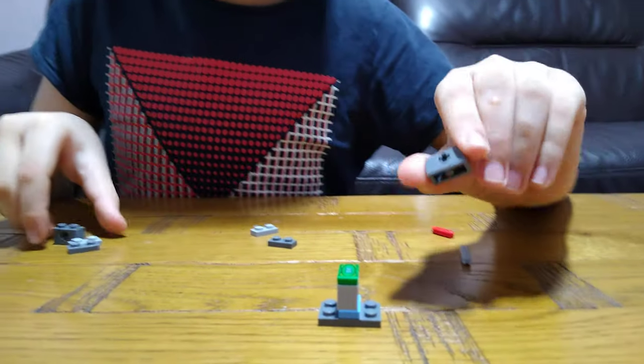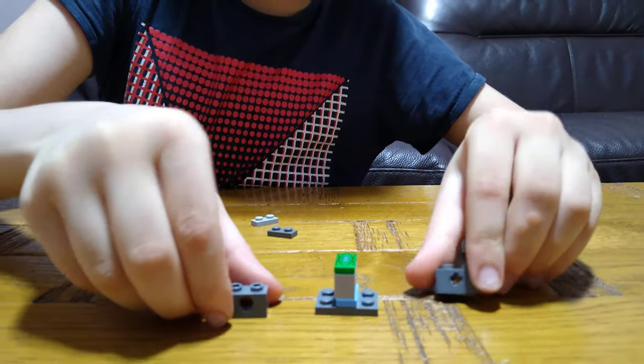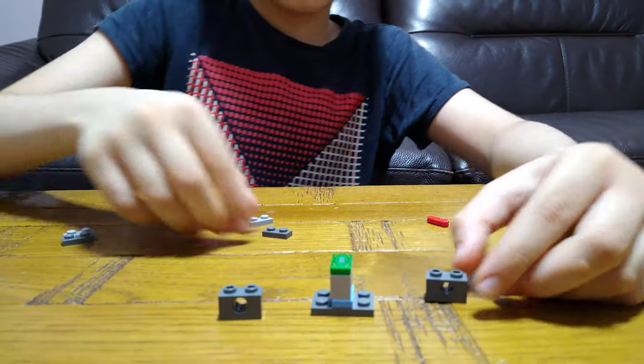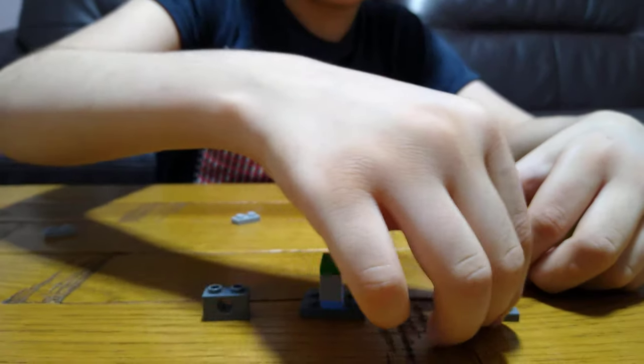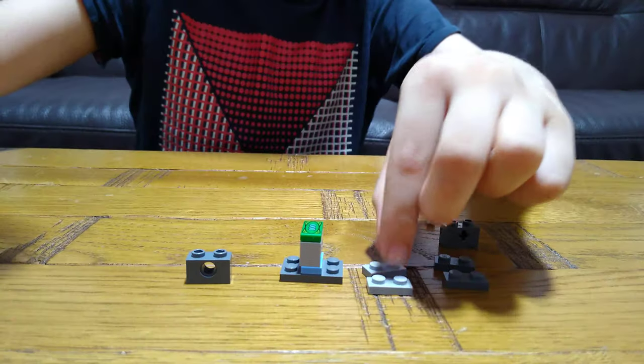And then get a grey one with a star and a grey one with an actual circle, and then get two of these and then two of these.